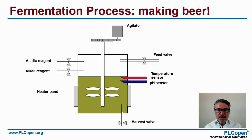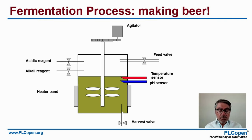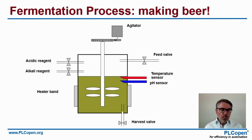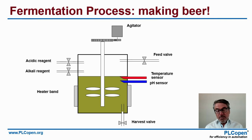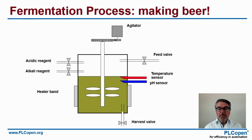Here we have the whole fermentation system: a large vessel with a motor acting as an agitator that keeps stirring the liquid inside. We have a feed valve to add liquid, an acid reagent and alkali reagent to control the pH value, and a heater vent to control the heat. There is also a harvest valve — when the process is finalized, we harvest.